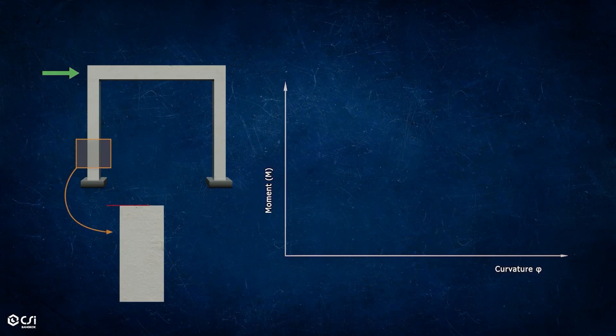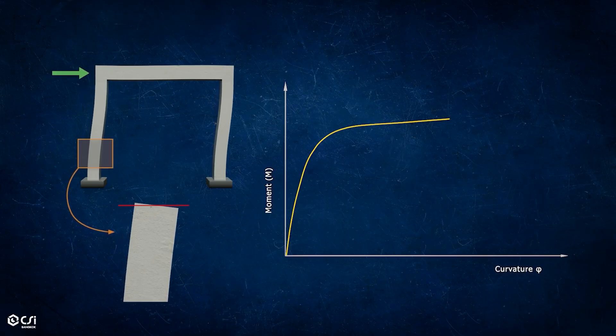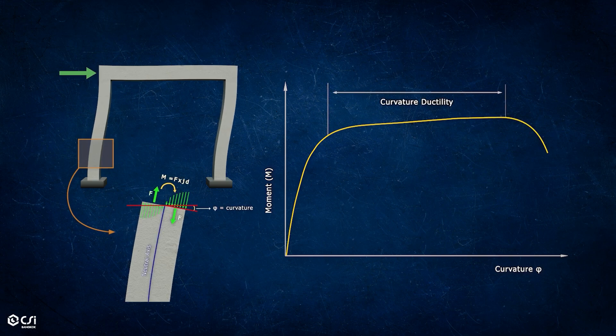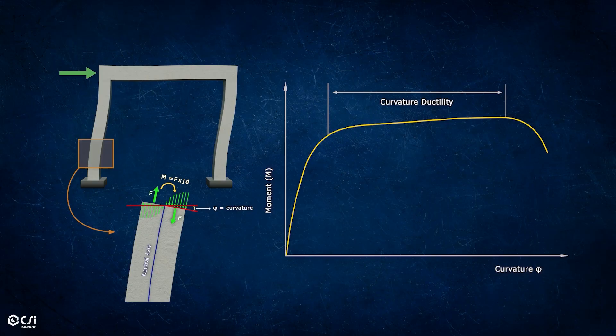Once we have a confined column, the curvature capacity is large, resulting in larger ductility, so the frames can carry larger loads before breaking.